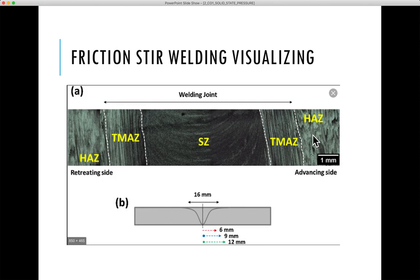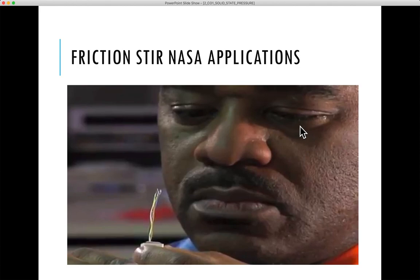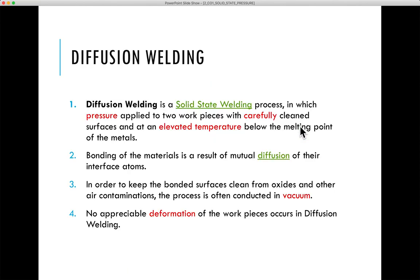In fusion welding a heat affected zone is also created, and in friction solid state welding process a heat affected zone is virtually created as well. This was all about friction stir welding. There is also a friction stir welding setup at the University of Malaysia, and a video has been uploaded for this lecture. There is also an application video for friction stir welding for NASA applications. Now we are going to move to diffusion bonding.